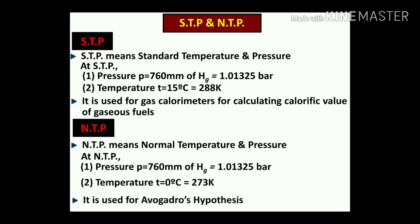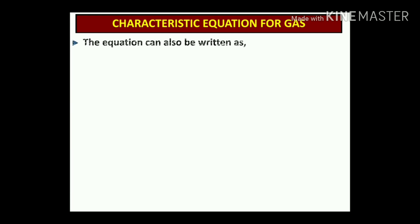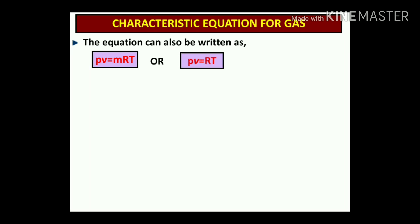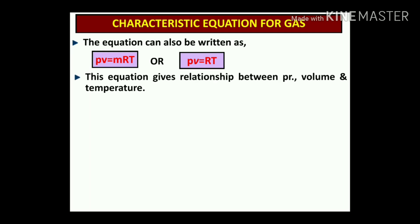NTP is used for Avogadro's hypothesis. As per Avogadro's theorem, the characteristic equation for a gas can be written as PV = mRT, and for 1 kg of mass it is written as PV = RT. This equation gives the relation between pressure, volume, and temperature.